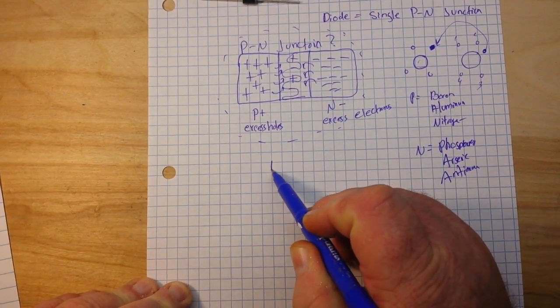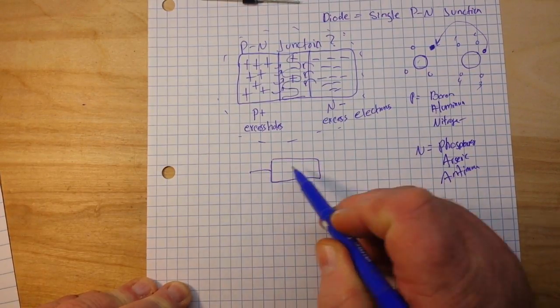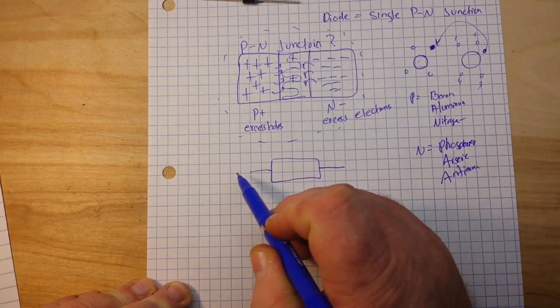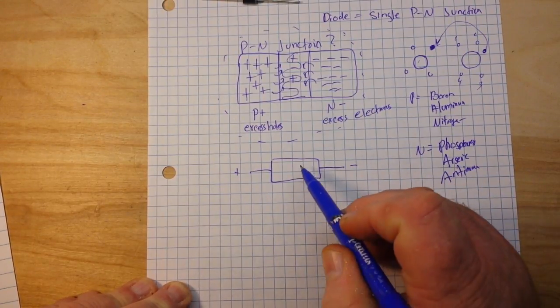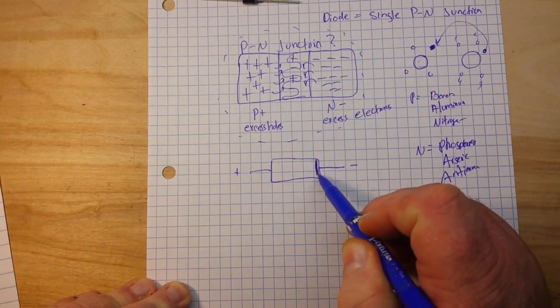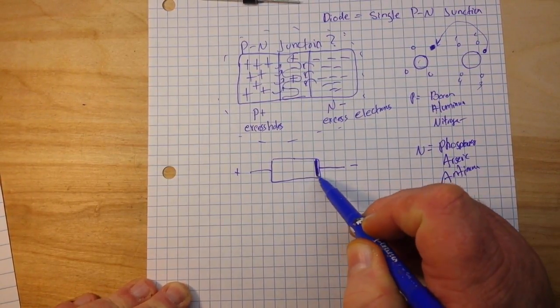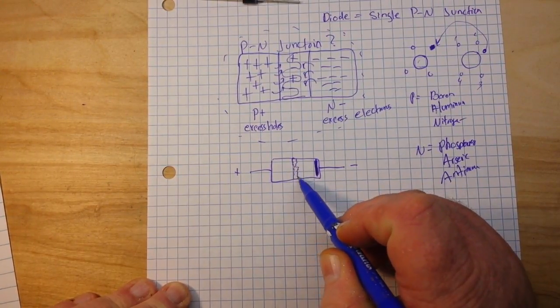So if we look at our diode, this is our diode. This is the anode, this is the cathode, and I'll draw our little bar here so you know how we're looking at it. And in here is our boundary layer.